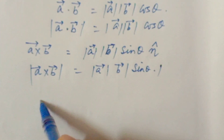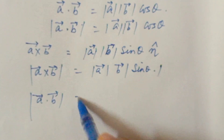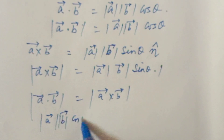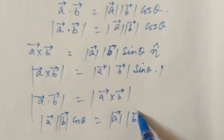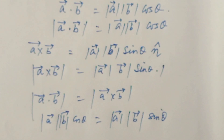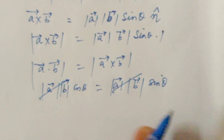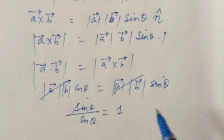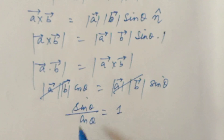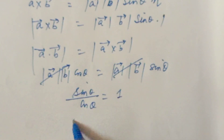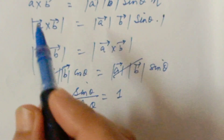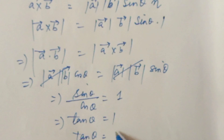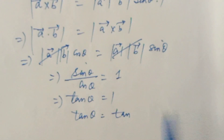Since it is given that magnitude of a dot b equals magnitude of a cross b, we have a*b*cos theta equals a*b*sin theta. The a*b terms cancel, leaving cos theta equals sin theta. Bringing cos theta down gives tan theta equals 1. Tan theta equals 1 at 45 degrees, or pi by 4.